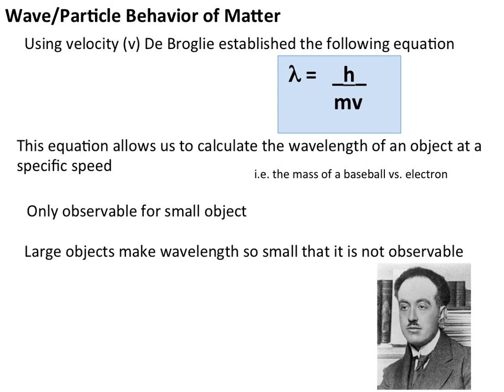De Broglie's main question was whether matter that is clearly particulate, having mass, exhibits wave-like properties. From other experimentation, we'd seen that items with wave-like properties also have particulate properties. De Broglie wanted to show that the reverse is true as well.